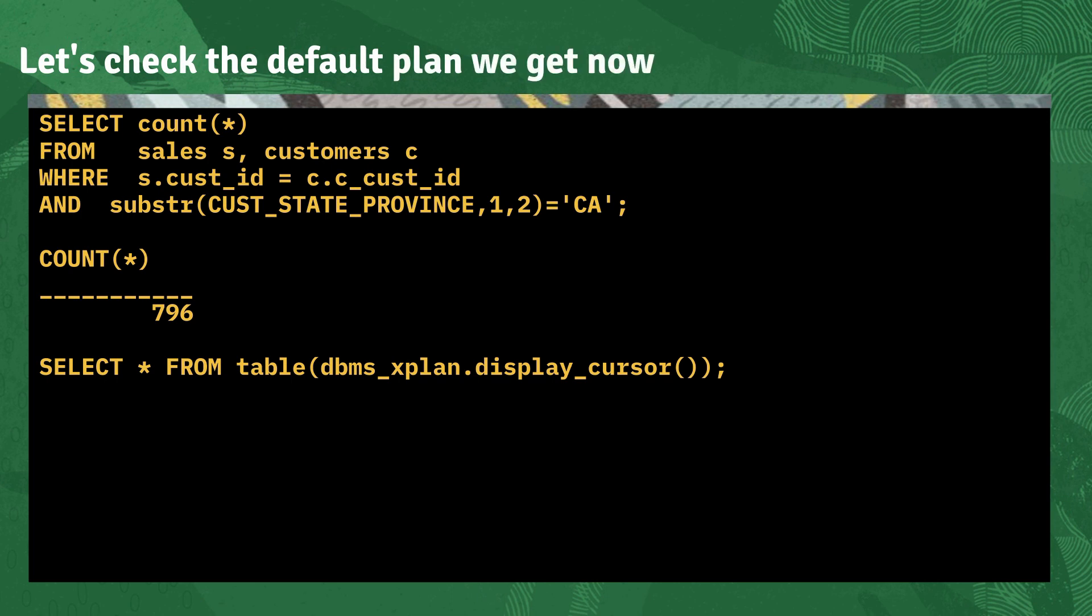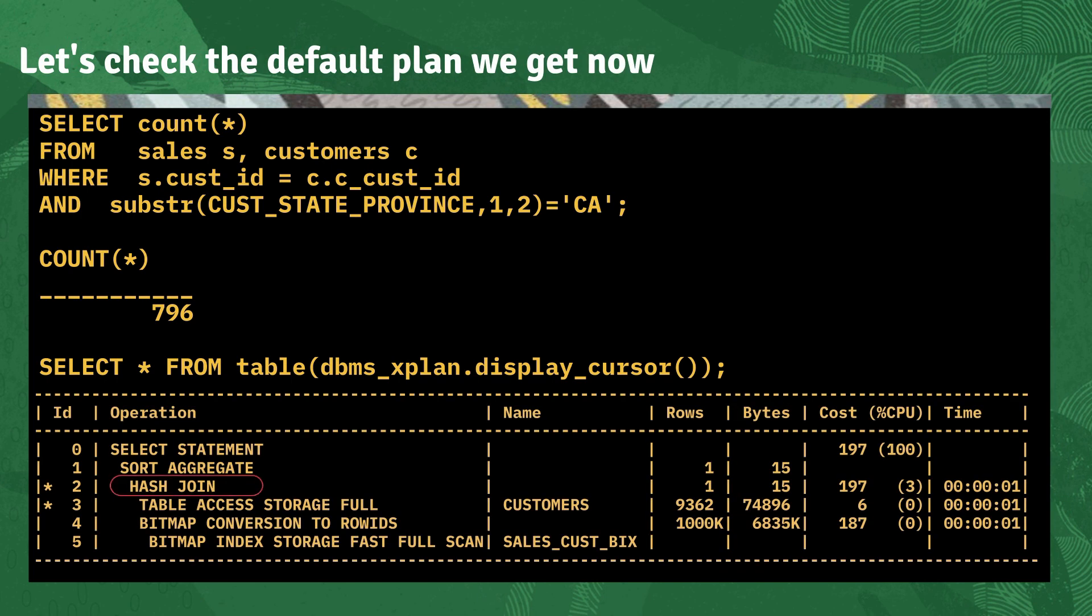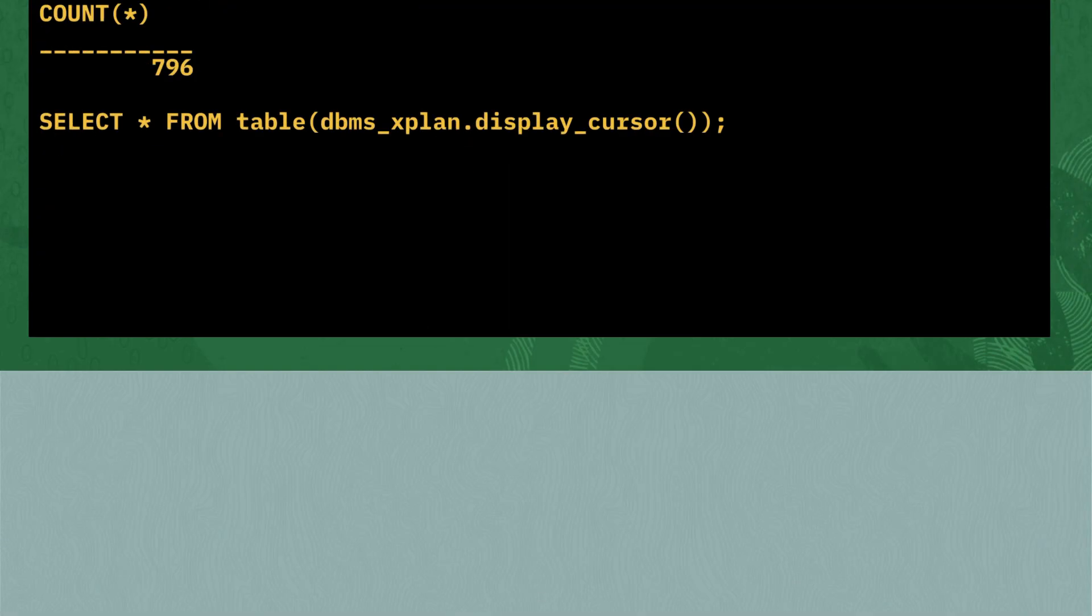So if we are to rerun the query now that we've created those extended stats, let's check and see what plan we get by default. Surprise, surprise, we're actually now getting the hash join as we expected. And if we look in the rows column, we're getting a very accurate cardinality estimate for both the customer and the sales table, allowing us to get the right plan without having to do anything like add hints, et cetera.